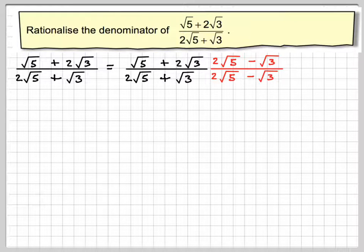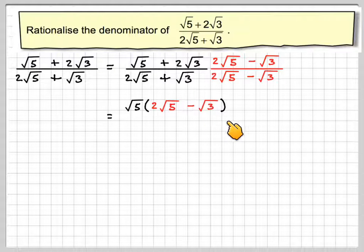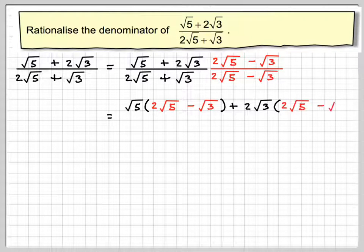Right, multiplying out. So you're going to have root 5 times this bracket here. So you're going to have root 5 brackets 2 root 5 minus root 3, and then plus 2 root 3 times 2 root 5 minus root 3.